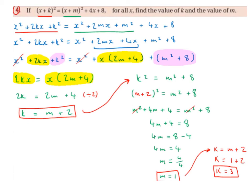We bring down the m squared and the plus 8. The m squareds cancel on either side, leaving us with 4m plus 4 equals 8. Bringing the 4 over gives 4m equals 8 minus 4, so 4m equals 4, meaning m equals 1. Since k equals m plus 2, we substitute m equals 1 to get k equals 1 plus 2, so k equals 3.